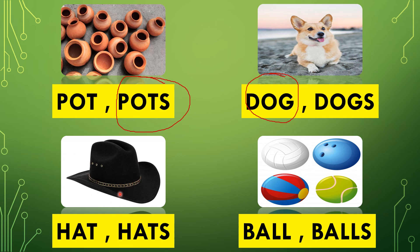What is this, children? Hat, isn't it? One hat or many hats? One. So which one will we circle — with S or no S? No S. Why? Because only one hat. That's why we will circle H-A-T, hat. Now let's go to the last picture.